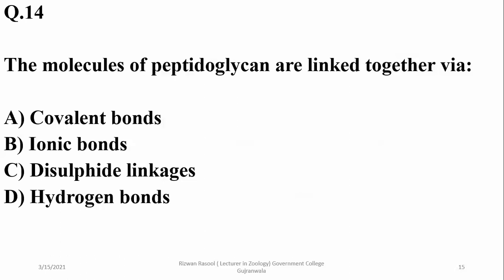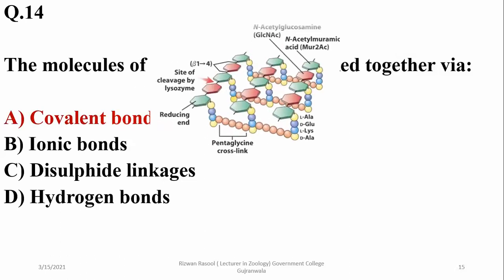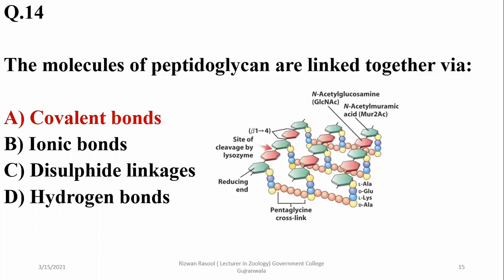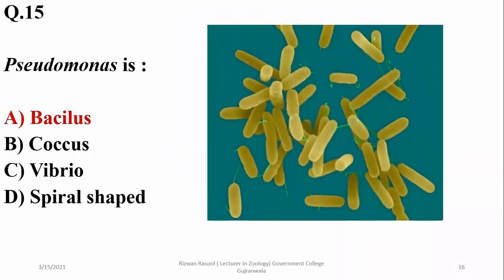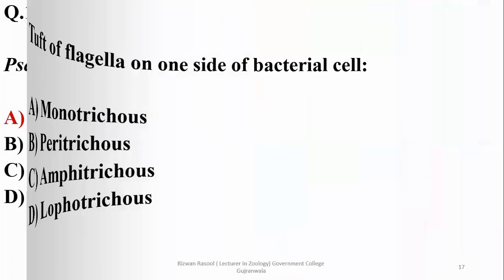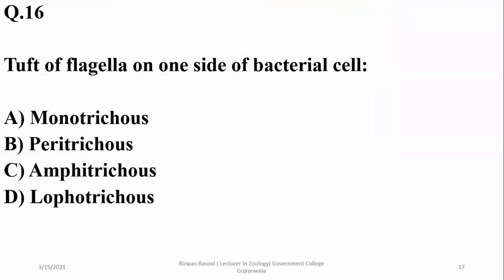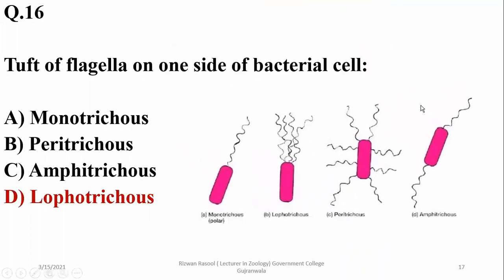The molecules of peptidoglycan are linked together via covalent bonds, so alpha is correct. Pseudomonas is a bacillus type of bacterium, alpha. A tuft of flagella on one side of a bacterial cell is referred to as lophotrichous arrangement, so delta is the right option. The different types are monotrichous, lophotrichous, peritrichous, and amphitrichous bacteria.